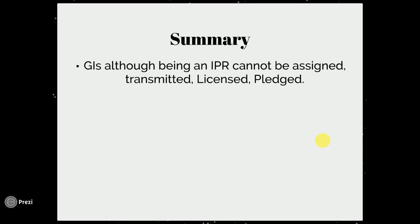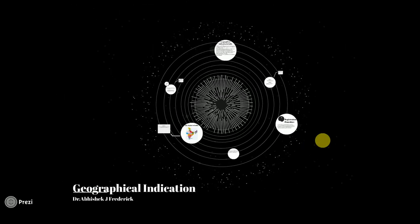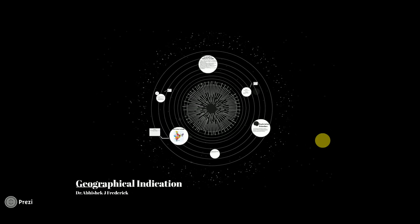Summary: GI, although being an IPR, cannot be assigned, transmitted, licensed, or pledged. So if a state has taken the GI, it cannot transfer the GI to any other state. Thank you for watching the video. Kindly like, share, and subscribe, and if you have any query, kindly ask me in the comment box. Thank you so much.